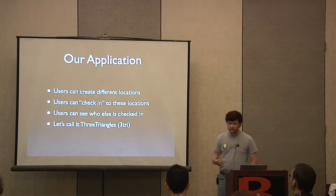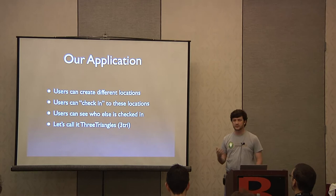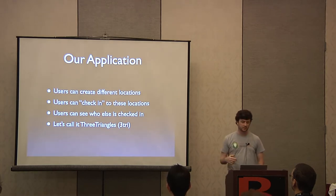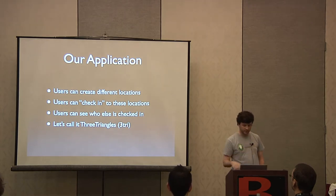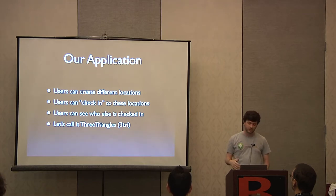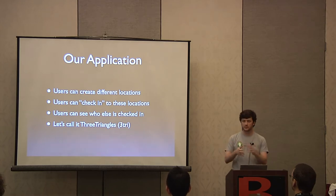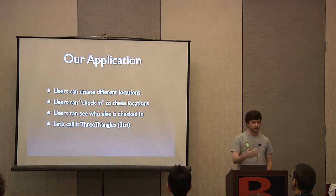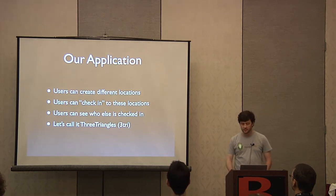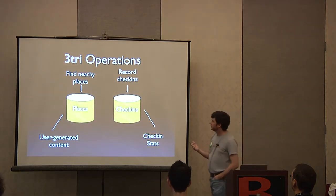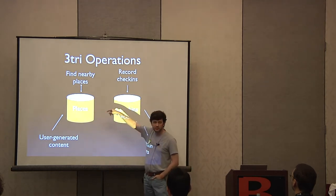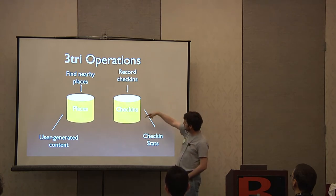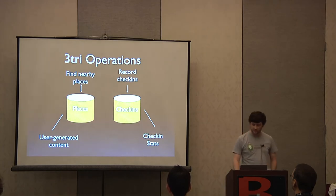The way we're going to do this is to actually go through and build an application — look at the data updates and manipulations needed. It's going to be a location-based check-in application. We'll call ours 3Triangle, just to avoid trademark problems. There are three main things a user can do: create different locations, check in to locations when you're nearby, and see who else has checked in. The main operations are: users create places, find nearby places, record check-ins, and do basic statistics on check-in data — like how many check-ins at a particular location on a particular day.